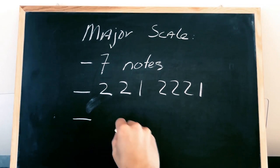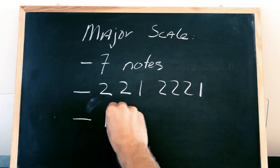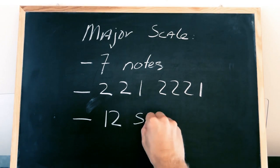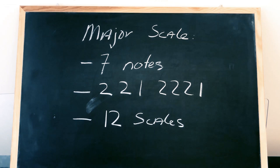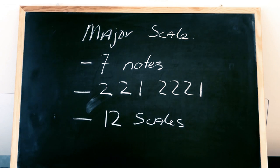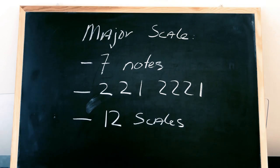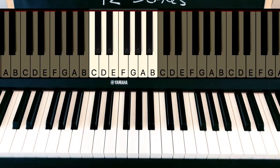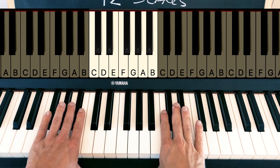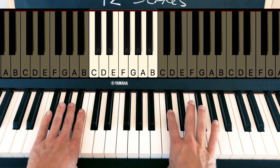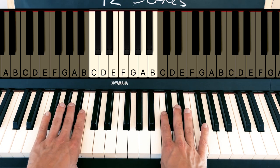And the last thing to keep in mind — it's not really a requirement — is that there are 12 scales like this, because we can start on any of the notes on the piano, and we have 12 notes that we keep in mind. So all of these notes in this area right here have a major scale attached to them.